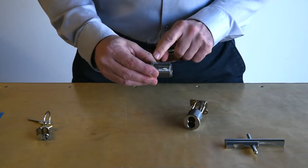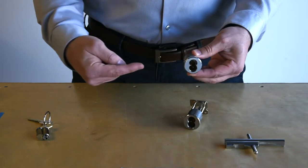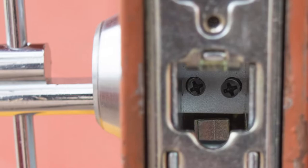You'll notice the threads along the mortise cylinder which allows it to be installed into a locking apparatus, and then the set screw is tightened down to secure the mortise cylinder in place.